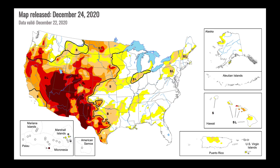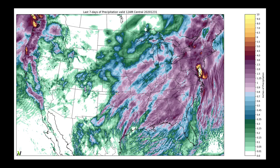I do expect some change to this map when it is released later today, and specifically that change will be coming across the eastern part of the United States, where over the last week we've seen quite a bit of precipitation stretching from parts of the mid-south, over to the southeast, and then of course in the northeastern part of the United States. We have had some improvement in the moisture along the west coast as well, primarily in parts of California, coastal Oregon, and Washington.